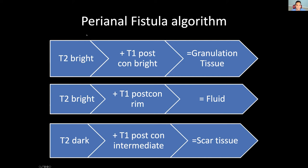A lot of MRs are done after the surgeon has already intervened, and the MRI is ordered to figure out what's left and how much granulation tissue there is. In that scenario, the T2 still stays bright, but now the T1 post-contrast sequence is also bright - not just rim enhancement, but actual enhancement within the fistula. That tells you the fistula is full of cells. That's why it's T2 bright but also enhancing, leading to the conclusion that it's granulation tissue. It's important to tell the surgeon: is there fluid, or is there granulation tissue?